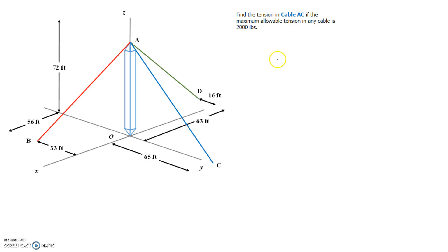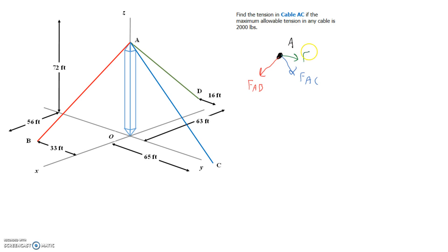The first step in any problem is to draw our free body diagram. Here, I'm going to draw our free body diagram at point A. At point A we have four forces acting on the point: we have our tension in cable AB, tension in cable AC, and tension in cable AD.